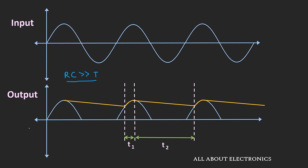Here we are assuming that the RC time constant of this filter is much larger than the time period of the waveform. If this condition is not satisfied, then the capacitor will get discharged rapidly. To avoid that problem, we should always check this condition. By properly selecting the RC time constant of the filter, we can reduce the discharging of the capacitor and hence also reduce the ripple in the output waveform.